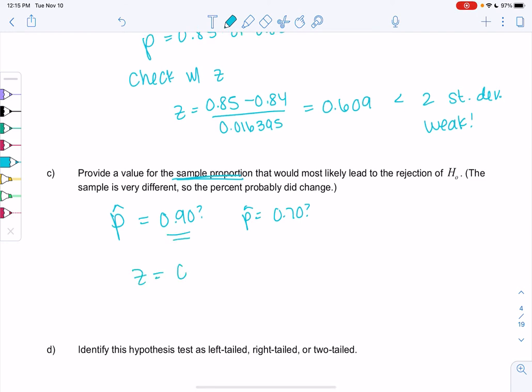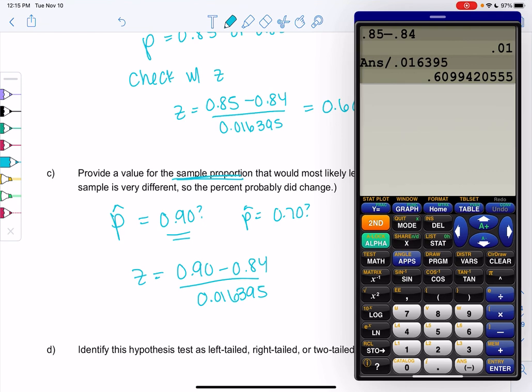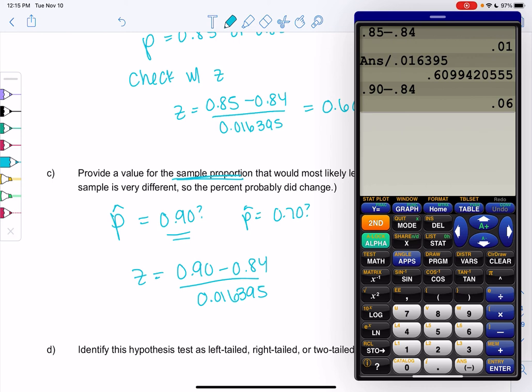So we'll do 0.90 minus the 84 all over the standard deviation. 0.016395. And again, if it's not more than two standard deviations, then just pick another number. So 0.90 minus 0.84. To me, 90 feels very different than 84. But let's check. So we'll divide by 016395.